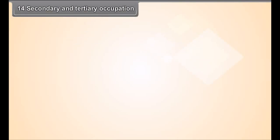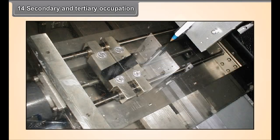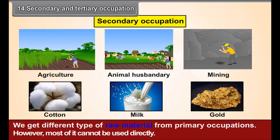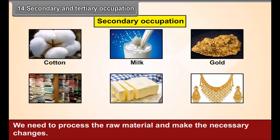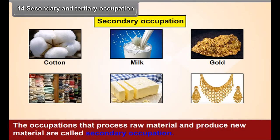Chapter 14: Secondary and Tertiary Occupations. We get different types of raw material from primary occupations. However, most of it cannot be used directly. We need to process the raw material and make the necessary changes. The occupations that process raw materials and produce new materials are called secondary occupations.